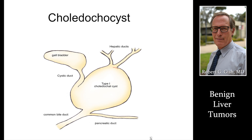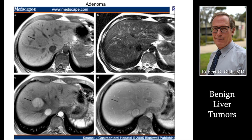Cysts of the bile tube, called choledocal cysts, can occur. These occasionally can turn into cancer, and either they need to be monitored or resected.